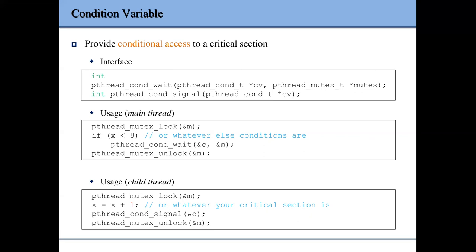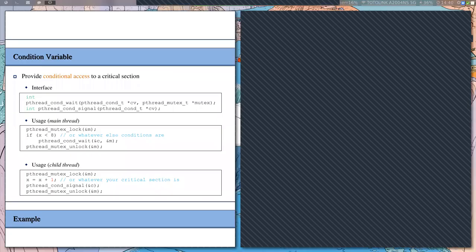After signaling, the child thread leaves the critical section by calling unlock on the mutex and finishes. For the main thread, after being woken up by the child thread, it returns from the condition wait function and continues execution. Note that we should actually use a while loop here instead of an if, because the main thread can be woken up multiple times. Using if would cause it to fall out of the critical section after being woken by just one thread. This will be discussed more later.